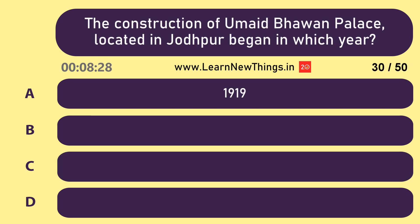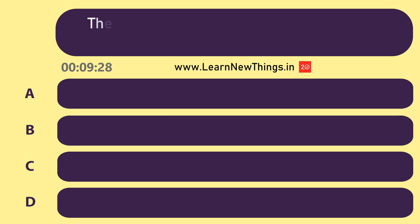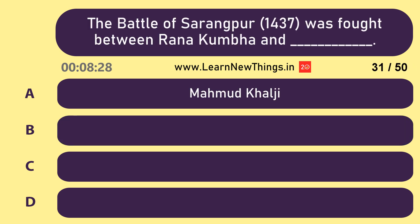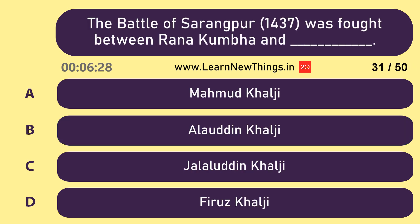The construction of Umaid Bhavan Palace located in Jodhpur began in which year? 1929. The Battle of Sarangpur was fought between Rana Kumbha and whom?